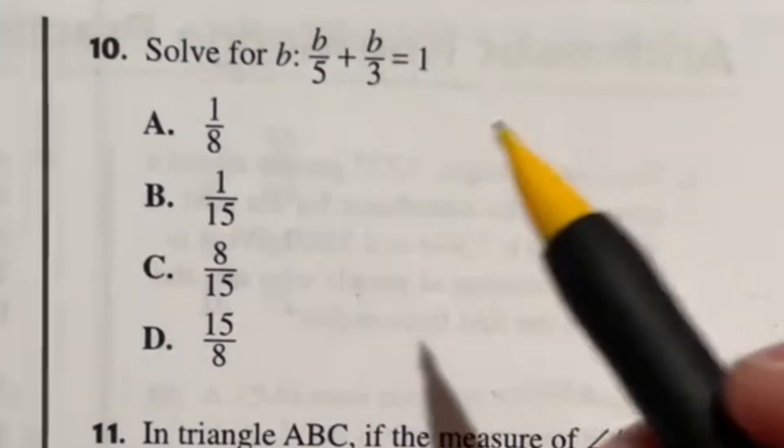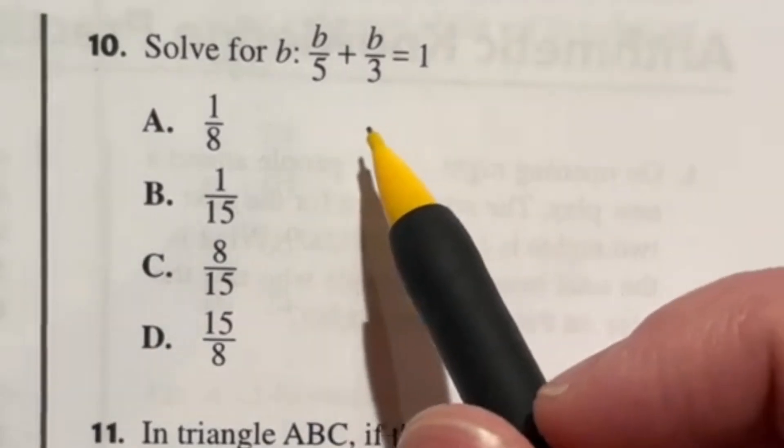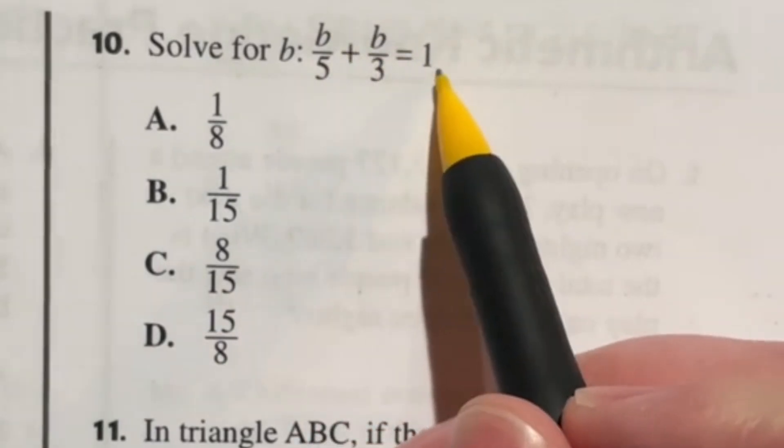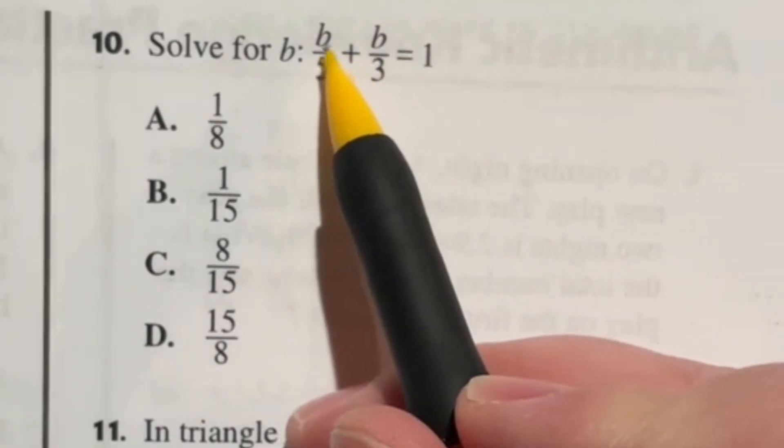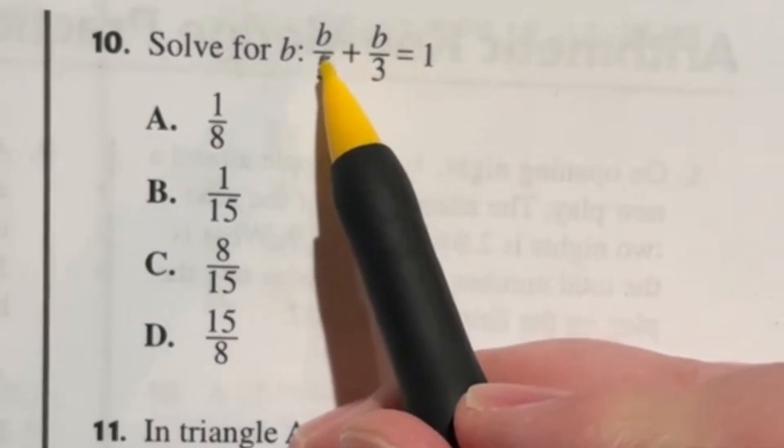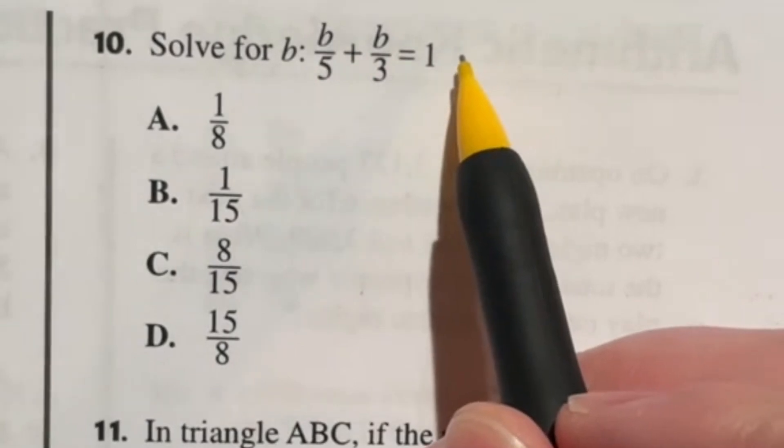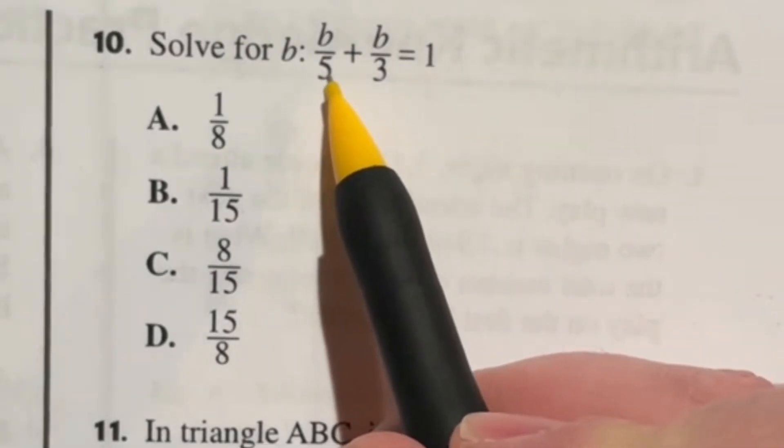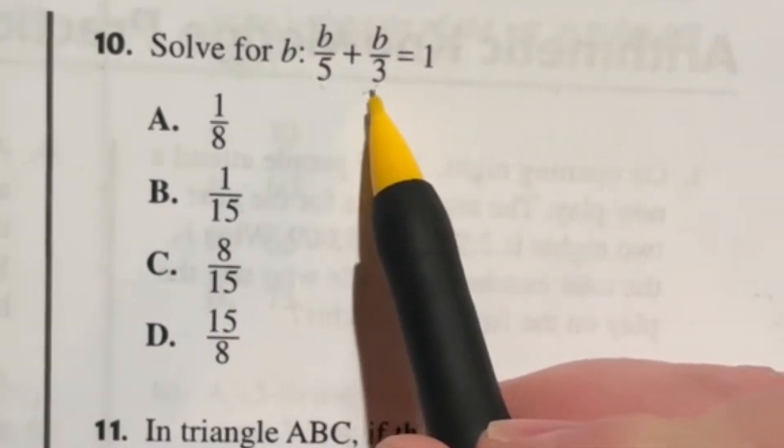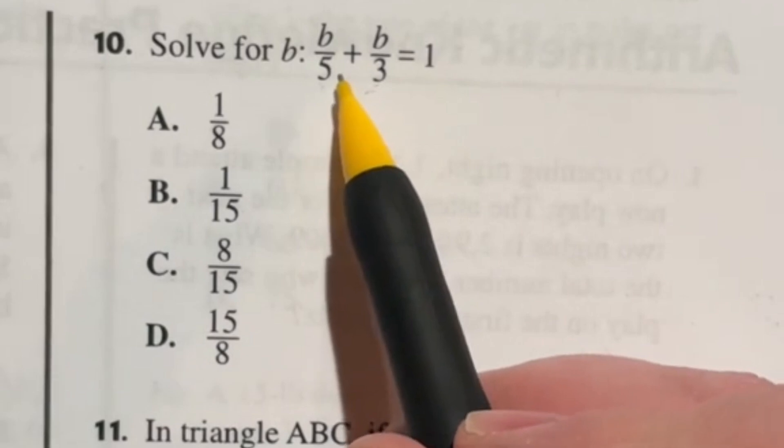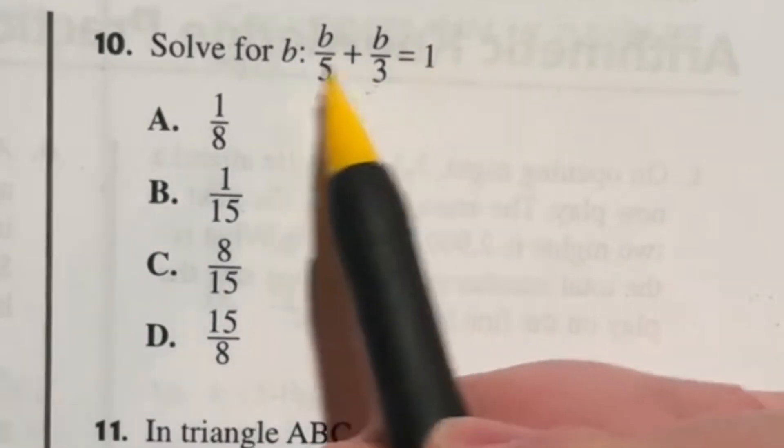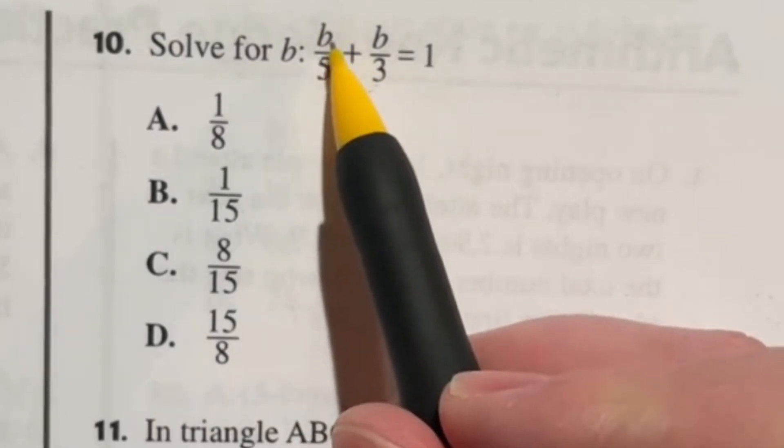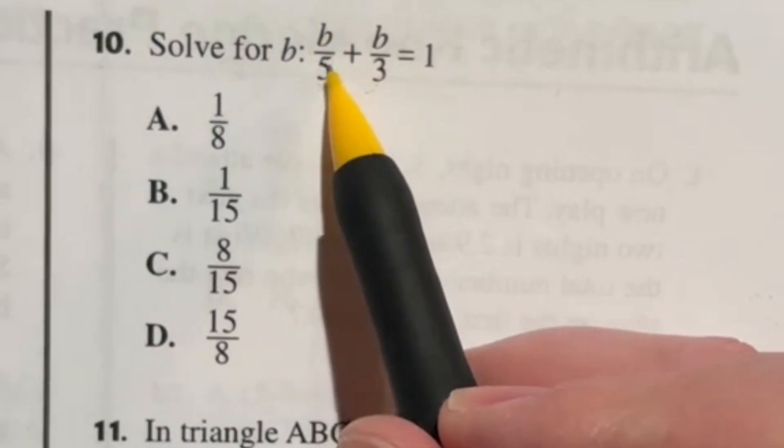So number 10 is another one of those questions that has a lot of different possibilities here but let's take a look. It says b over 5 plus b over 3 is equal to 1. Now I know people hate dealing with fractions so the first thing we want to do here is multiply everything by 15. Why 15? Because that's the least common denominator meaning it's the smallest number that both of these will divide evenly. So if I go ahead and multiply the whole equation by that it's going to get rid of all of my fractions.